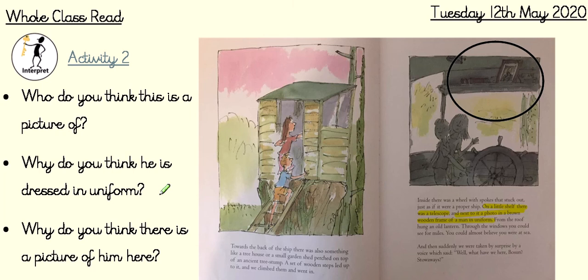And finally, why do you think there is a picture of him here? So why, in a garden shed which is supposed to be the bridge of a ship — the place where all the navigation and the steering is done — why do you think there's a picture of a man dressed in a uniform? Who is he, and what role is he going to have to play in the story? Have a go at answering those questions, and I can't wait to see your responses.